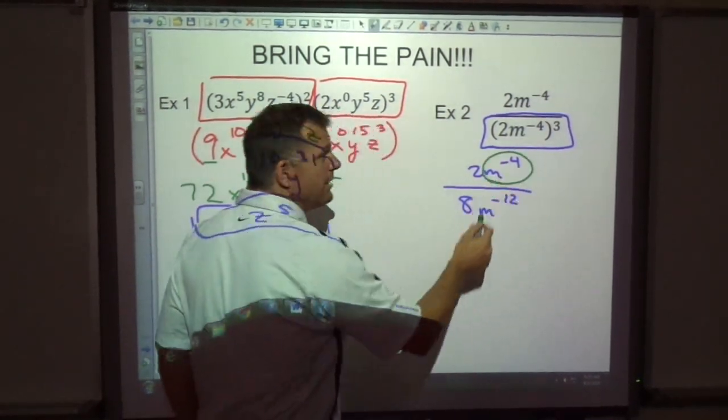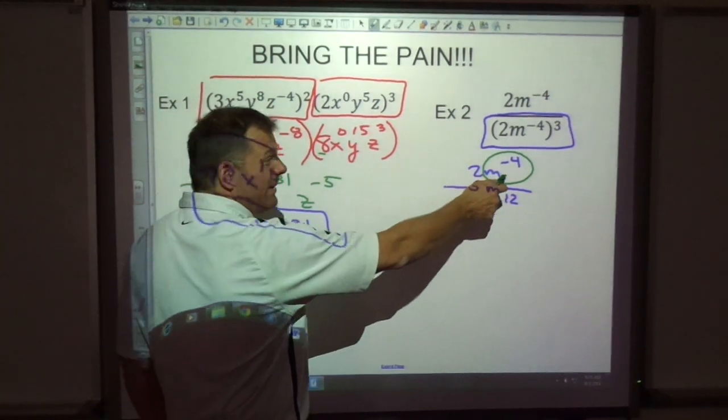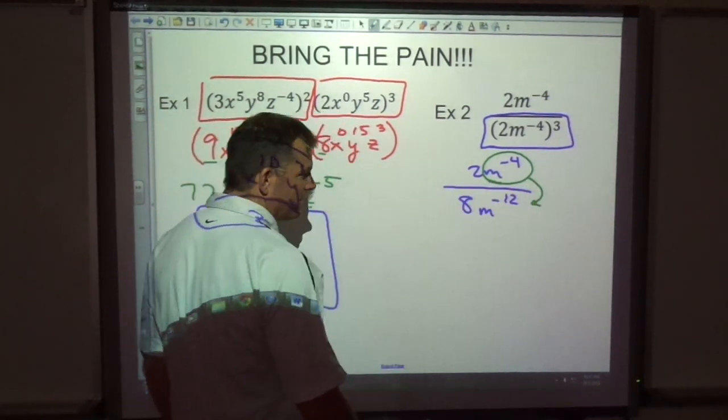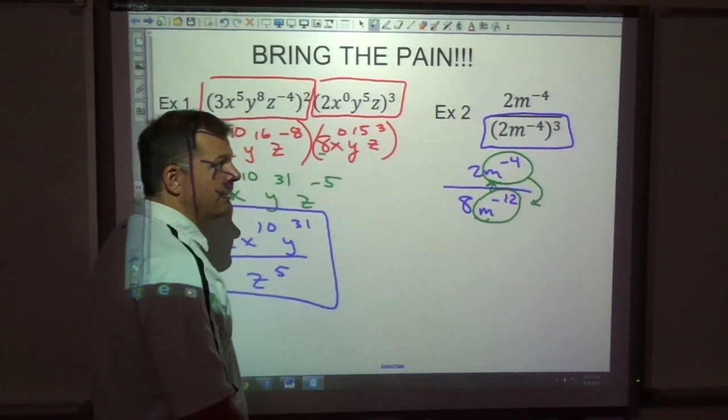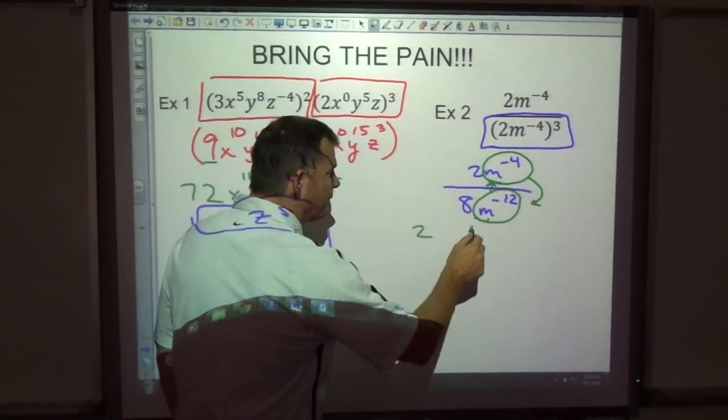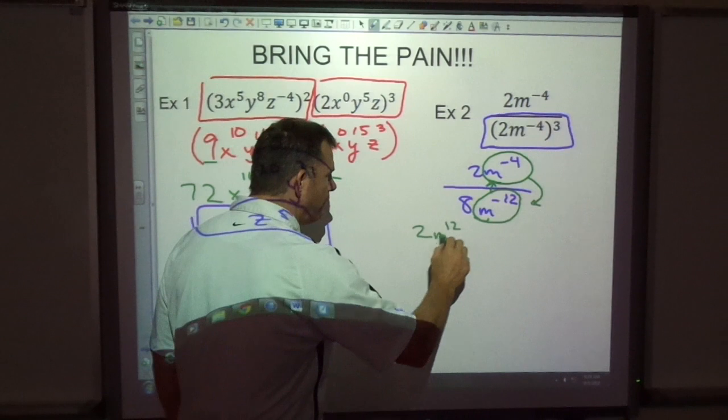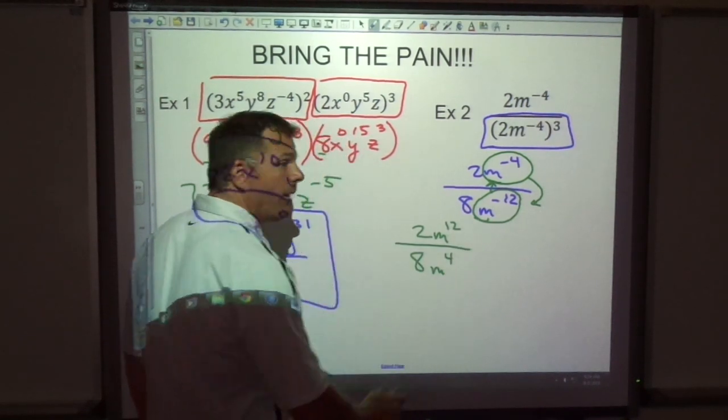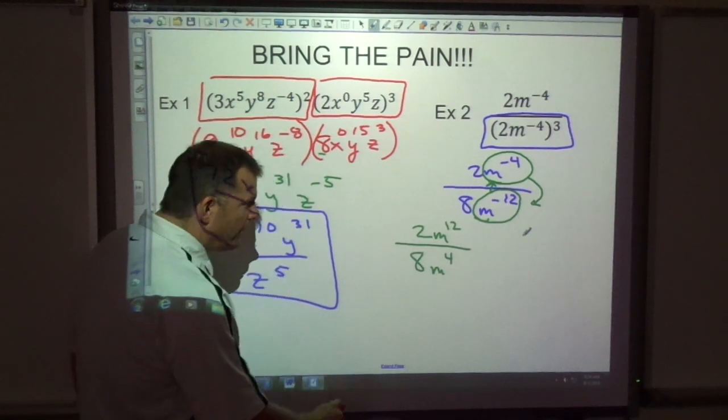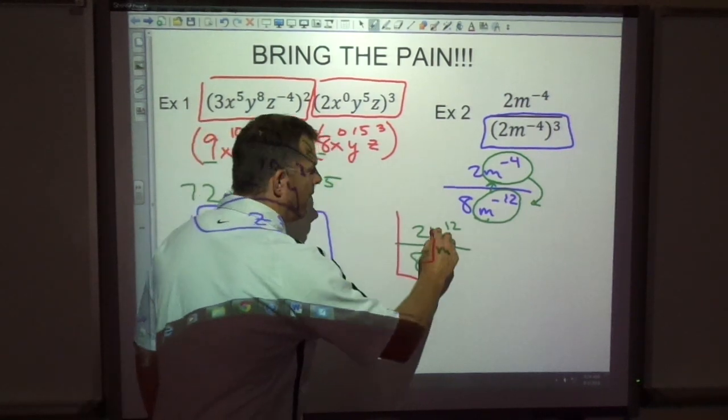So I take the things that are negative and I say, he doesn't want to be upstairs, he wants to live downstairs. He doesn't want to be downstairs, he wants to come up. So let's just trade these guys and put them where they want to be. So 2m to the 12th in the top and 8m to the 4th in the bottom.